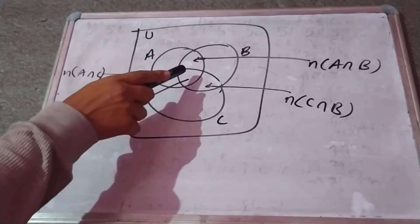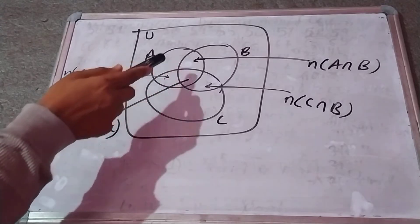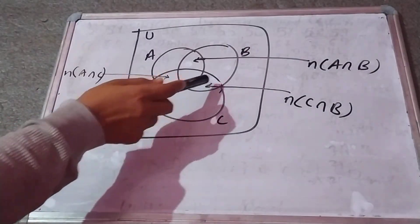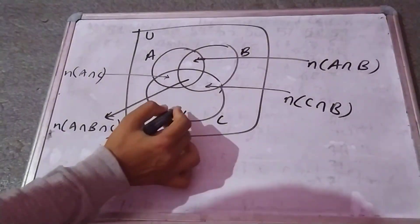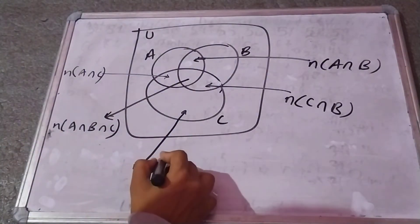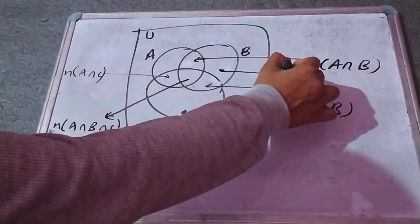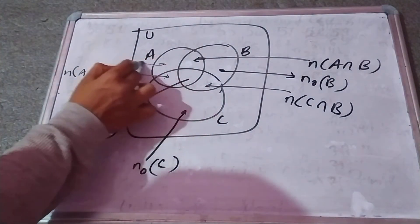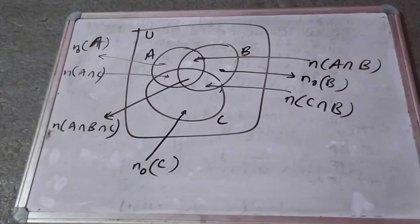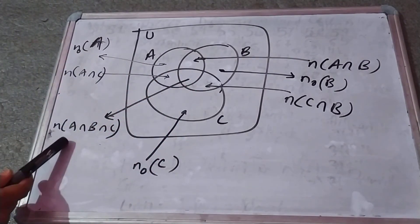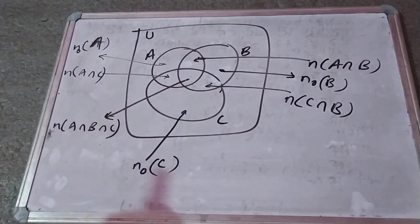A, B, C — and A and C. We have to share the information at certain points. We have to share the information: this part is only C, this part is only B, and this part is only A. Then this Venn diagram — the first part is A intersection B intersection C. This part is the last part: only A, only B, and only C — in the same way.